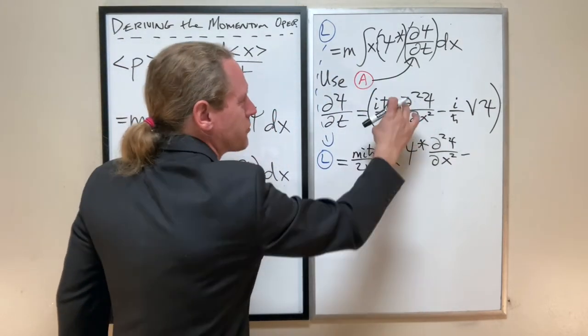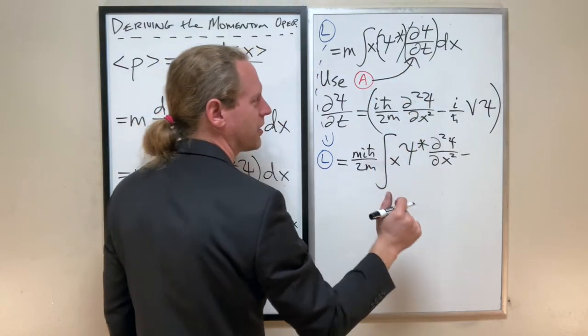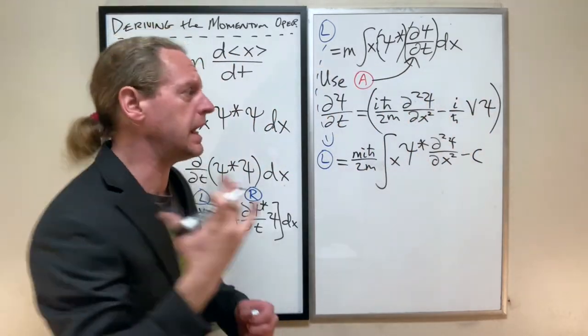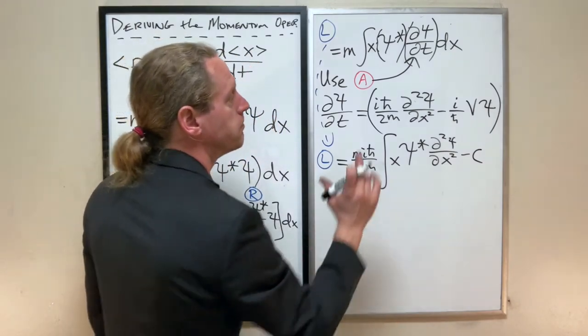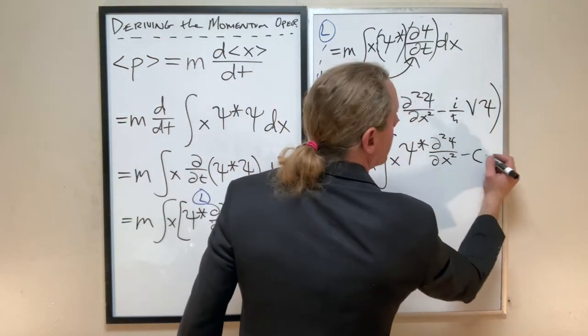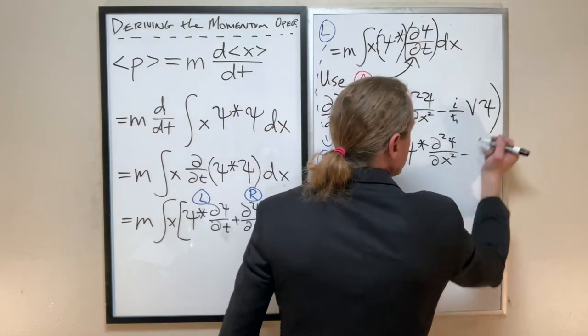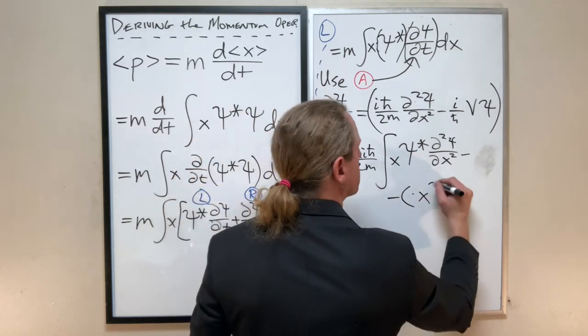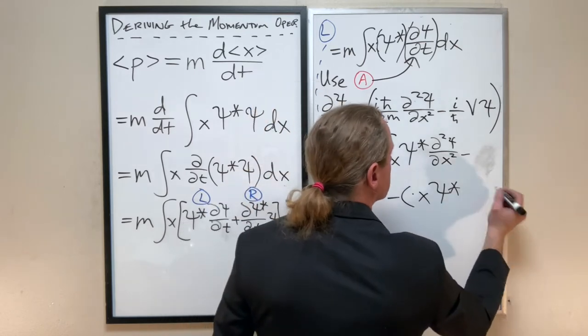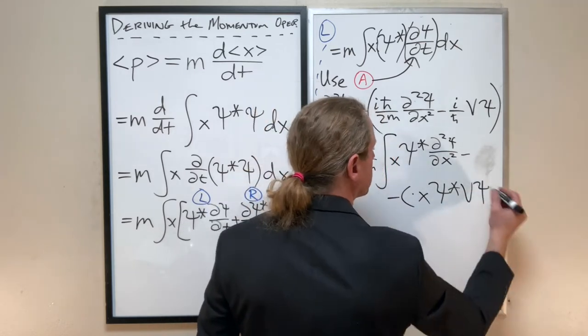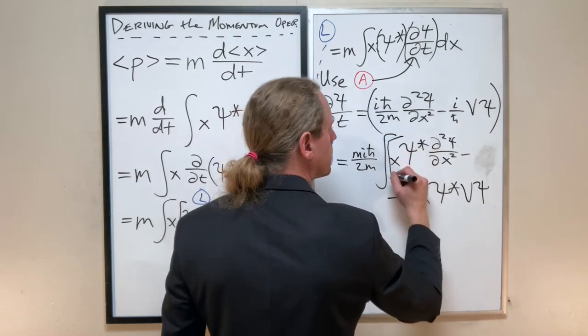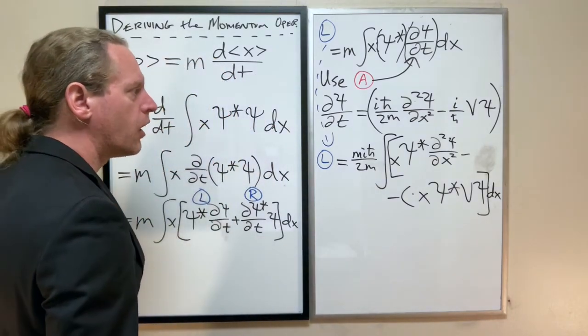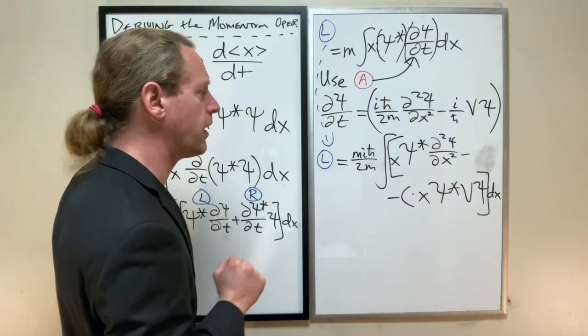Re-putting that term back in, it's going to look like minus some constant. I'm just going to generically write the constant as C. In the end, I guarantee you this term is going to disappear, but minus C times X Psi star V Psi, and all of that is dx. Okay, so I'm not 100% confident I've done that right, so I'm going to pause for a second just to make sure I did. You should do the same.